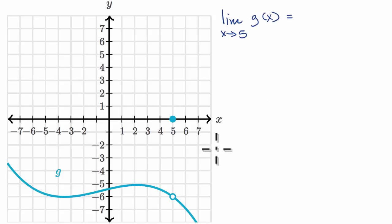Well, we've done this multiple times. Let's think about what g of x approaches as x approaches five from the left. g of x is approaching negative six. As x approaches five from the right, g of x looks like it's approaching negative six. So a reasonable estimate based on looking at this graph is that as x approaches five, g of x is approaching negative six.